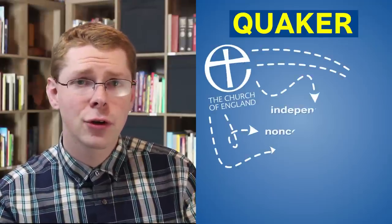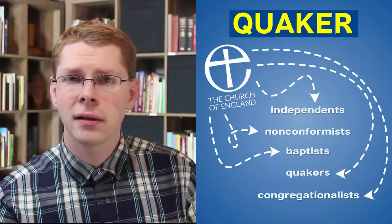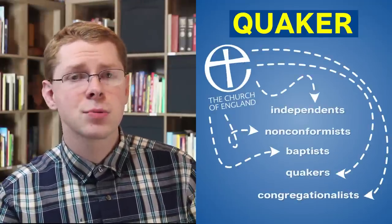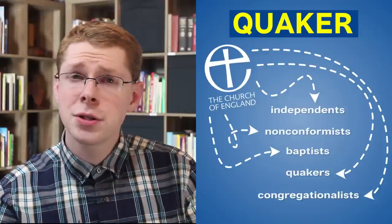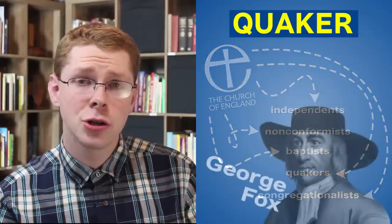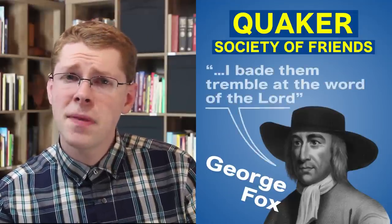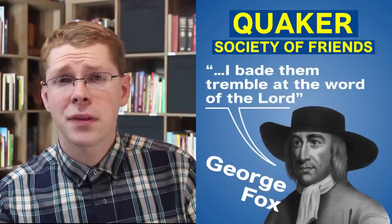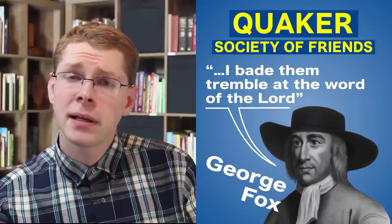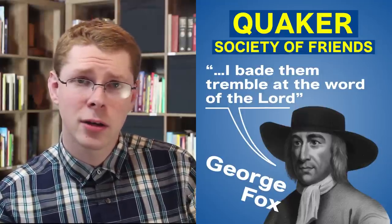Quakers find their origin in a break from the Church of England in the 1600s. There were several groups who were separating at that time from the Anglicans, and these were called nonconformists. Quakers, who found their beginnings in the teachings of one George Fox, were just one of these. Officially they are the Society of Friends, but when Fox was called before magistrates on a charge of blasphemy, he said that he bid them quake at the word of the Lord, and this apparently caused them to begin to be called Quakers.